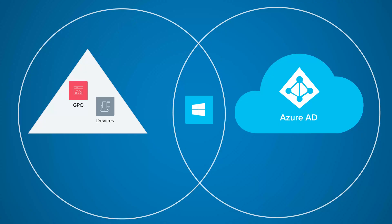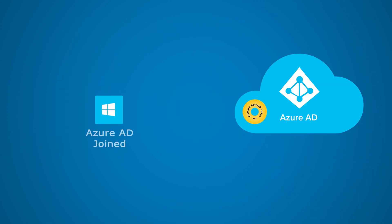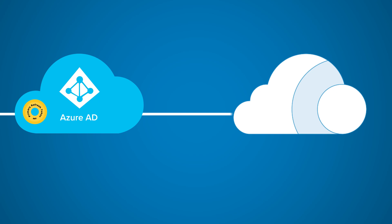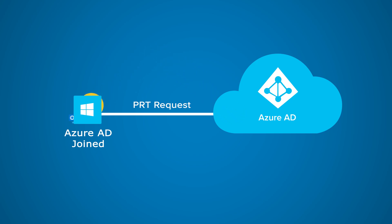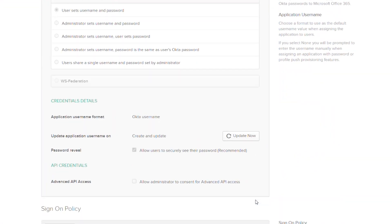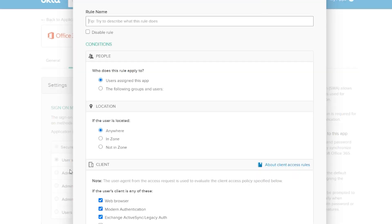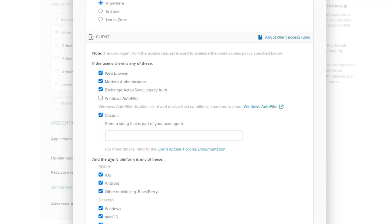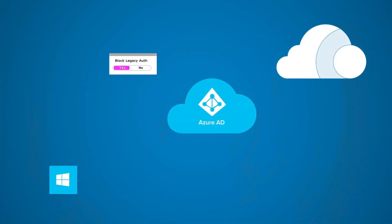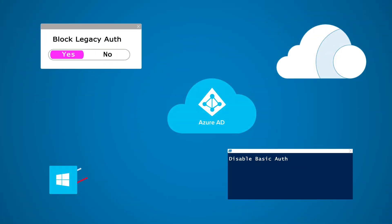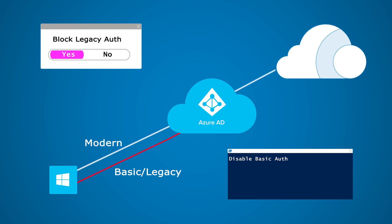There are two things customers can do. Strongly consider the possibility of migrating to an Azure AD joined scenario. When Azure AD joined, the PRT process does not use the legacy endpoint, so customers can continue to block all of the legacy authentication on the Okta side. The other option is to consider using the Office 365 custom user agent feature. With this feature, the customer can selectively allow the Windows 10 request that is requesting the PRT token while blocking all other legacy authentications. In addition, customers could also use Azure AD conditional access or PowerShell to block all legacy authentication requests that come to Okta from their Office 365 tenant. This will ensure the best effort to maintain the security posture.